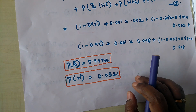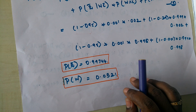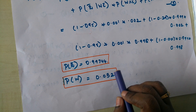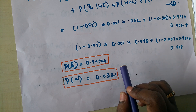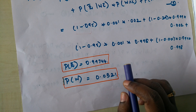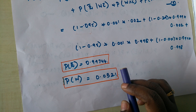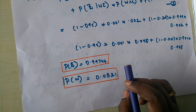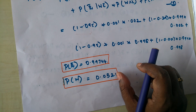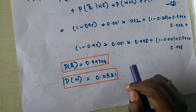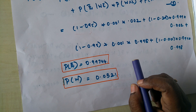Similarly, we can also use BBN for classification — for example, predicting whether a document belongs to a sports category or a political category. We can also use BBN for decision making and prediction problems. That is about the Bayesian belief network. Thank you.